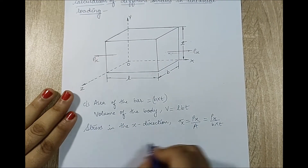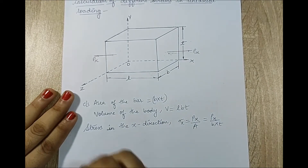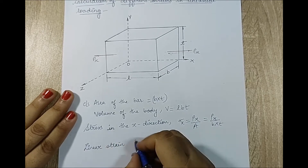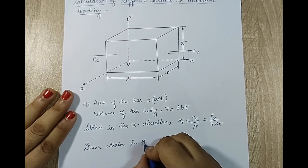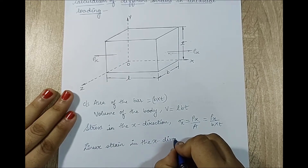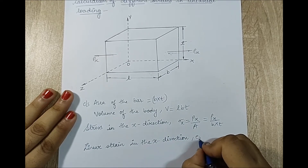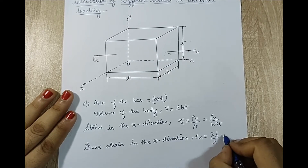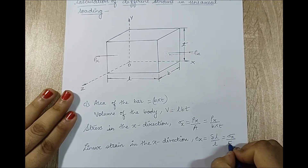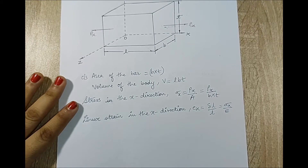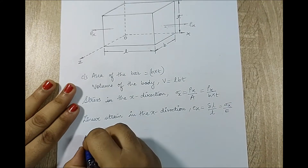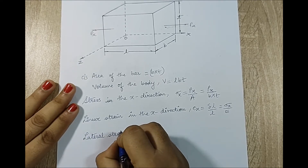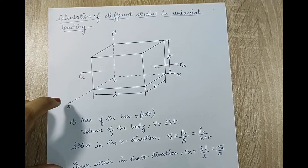Since there is a stress along the x-axis, there will be a linear strain in the x direction. Let me call it Ex — it will be δL/L, or equivalently sigma x upon E. Since I have spoken about linear strain, I will next talk about lateral strain. There will be two types of lateral strain: one along the y-axis and one along the z-axis.